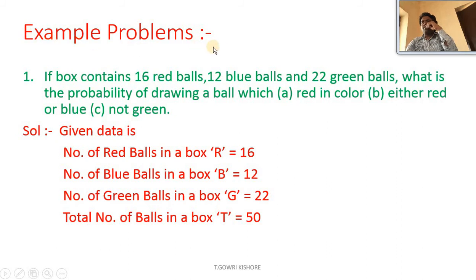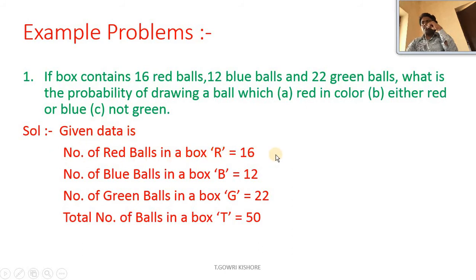Example problem number one: a box contains 16 red balls, 12 blue balls, and 22 green balls. What is the probability of drawing a ball which is (A) red in color, (B) either red or blue, (C) not green? Given: red balls R = 16, blue balls B = 12, green balls G = 22. Therefore total number of balls T = 50.